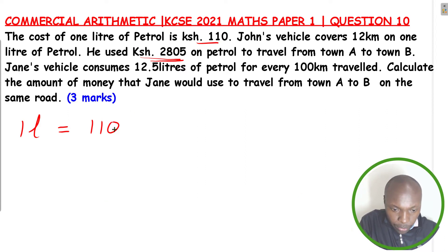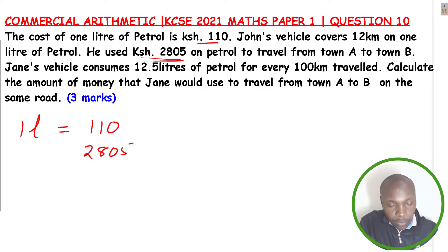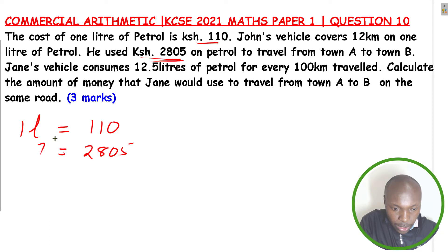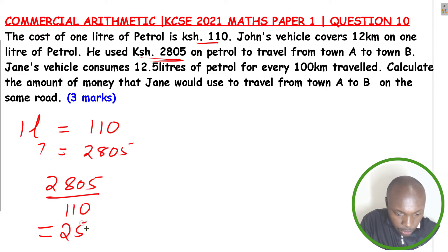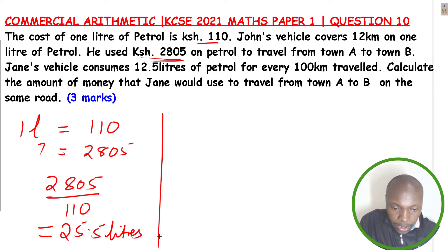With this amount, we can get the number of liters that were used. If 1 liter costs 110 shillings, then 2,805 shillings divided by 110 gives us the number of liters. So 2,805 divided by 110 equals 25.5 liters — these are the liters used to travel from A to B.